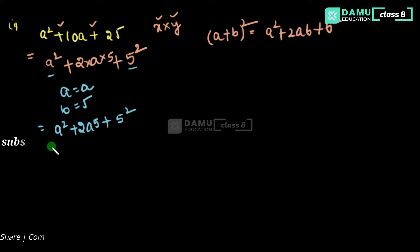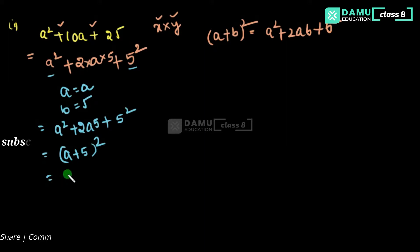So a is equal to a and b is equal to 5. Since it matches the formula a squared plus 2ab plus b squared, the answer is (a + 5) whole square, which equals (a + 5) into (a + 5).